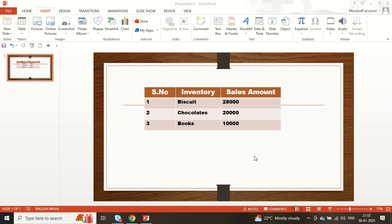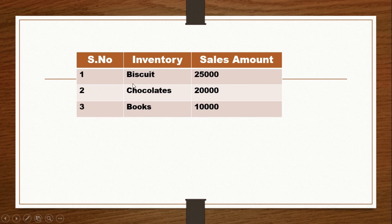Hello everyone. In this video we are going to look at how we can do animation for every row one by one. There are a total of four rows available, and when going to presentation view it shows everything at once — but we want each row to appear one by one. That is what we are going to look at in this video.